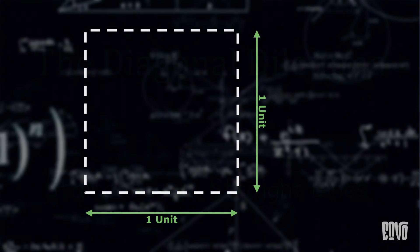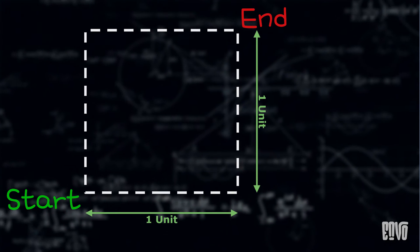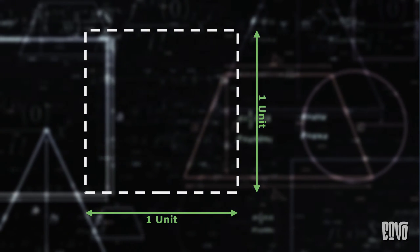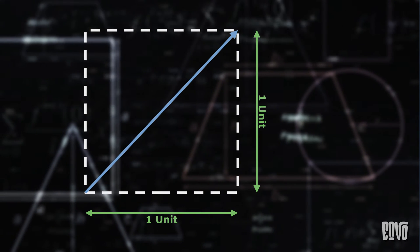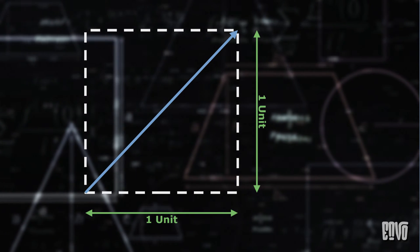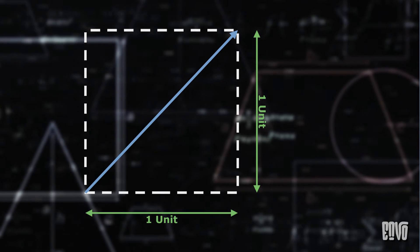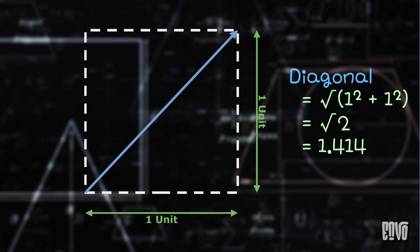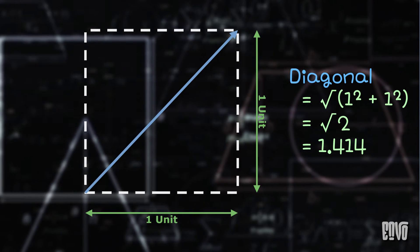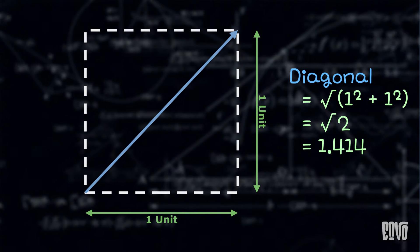Imagine you're at the bottom left corner of a perfect unit square, and you want to reach the top right corner. The shortest path, as Pythagoras famously taught us, is the diagonal straight line. If the sides of the square are each one unit long, then by the Pythagorean theorem, the length of this diagonal is square root of one squared plus one squared, which equals square root of two, approximately 1.414 units.